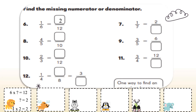Next: I have 1 seventh is equal to 2 over something. I'll ask myself, 1 times what is equal to 2? Yes, 1 times 2 equals 2, so my factor is 2. I have to do the same with the denominator and multiply the 7 by 2, giving me 14.